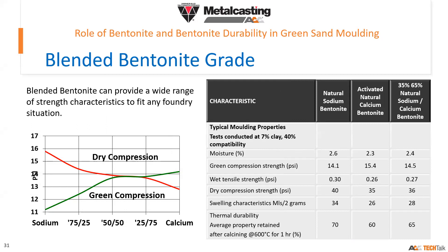Some countries in the US or Europe do blending of natural sodium and natural calcium to achieve a compromise between both properties. In this chart, 100% sodium is on the left and 100% calcium on the right. By comparing green sand and dry sand properties like green compression and dry compression, you can optimize both properties by blending 75% sodium with 25% calcium, or 50% sodium with 50% natural calcium.